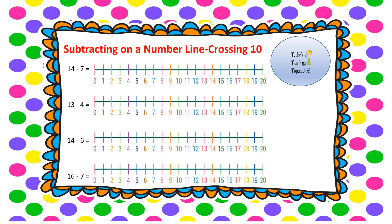Continuing to subtract on a number line — this time we're going to cross that 10 barrier. First question: 14 take away 7. Find 14 on the number line and jump back 7 spaces: 1, 2, 3, 4, 5, 6, 7. We've landed on 7, so 14 take away 7 equals 7. Next question: 13 take away 4. Jump back 4 spaces: 1, 2, 3, 4. I've landed on 9, so 13 take away 4 equals 9.